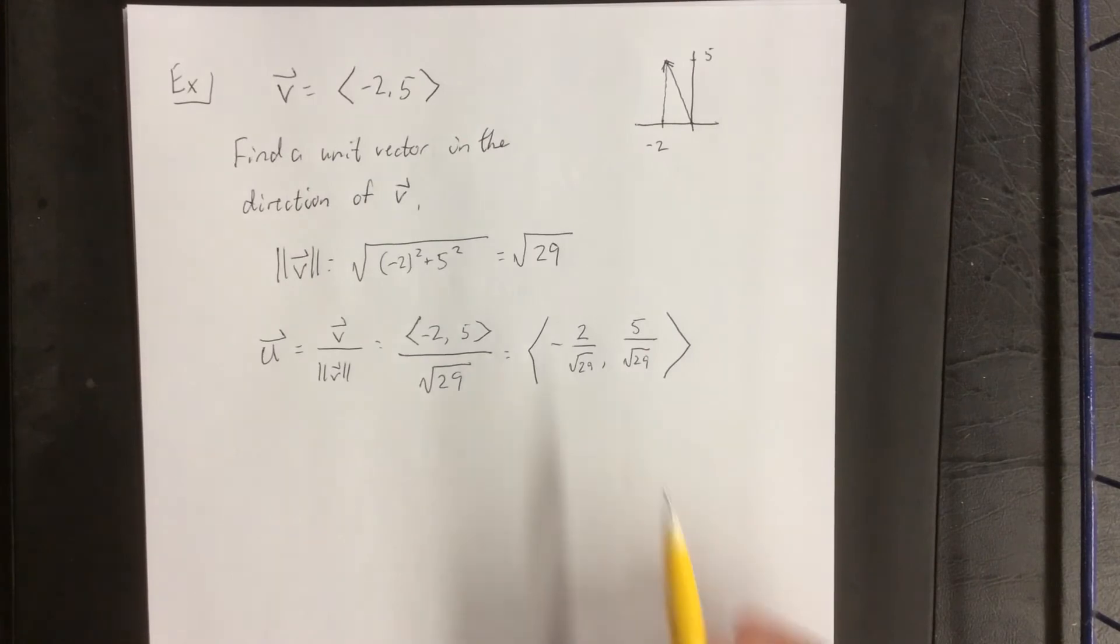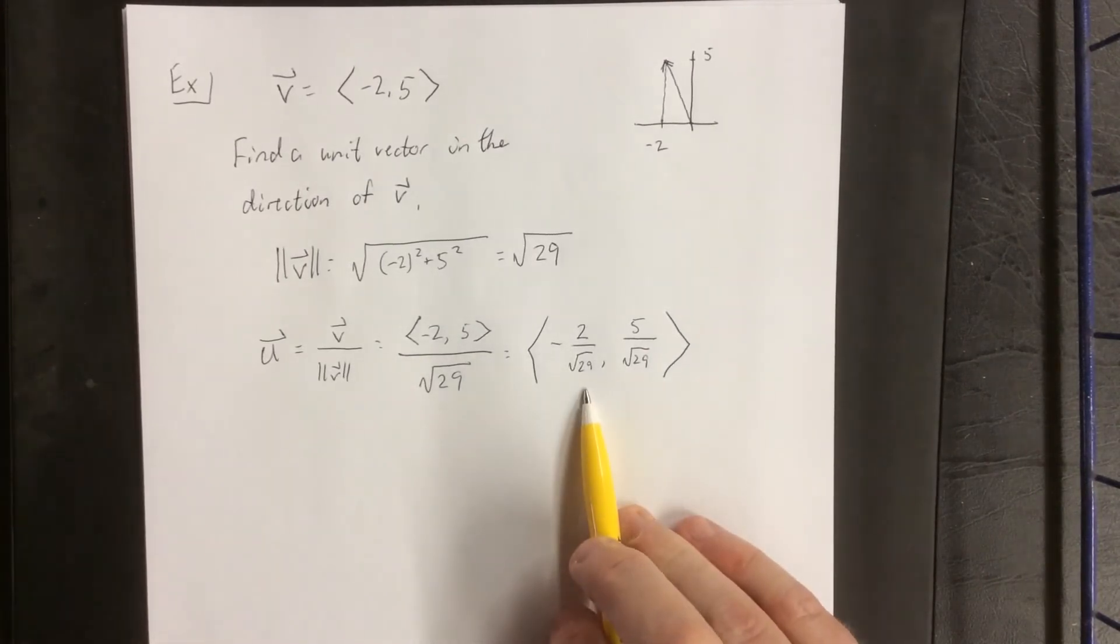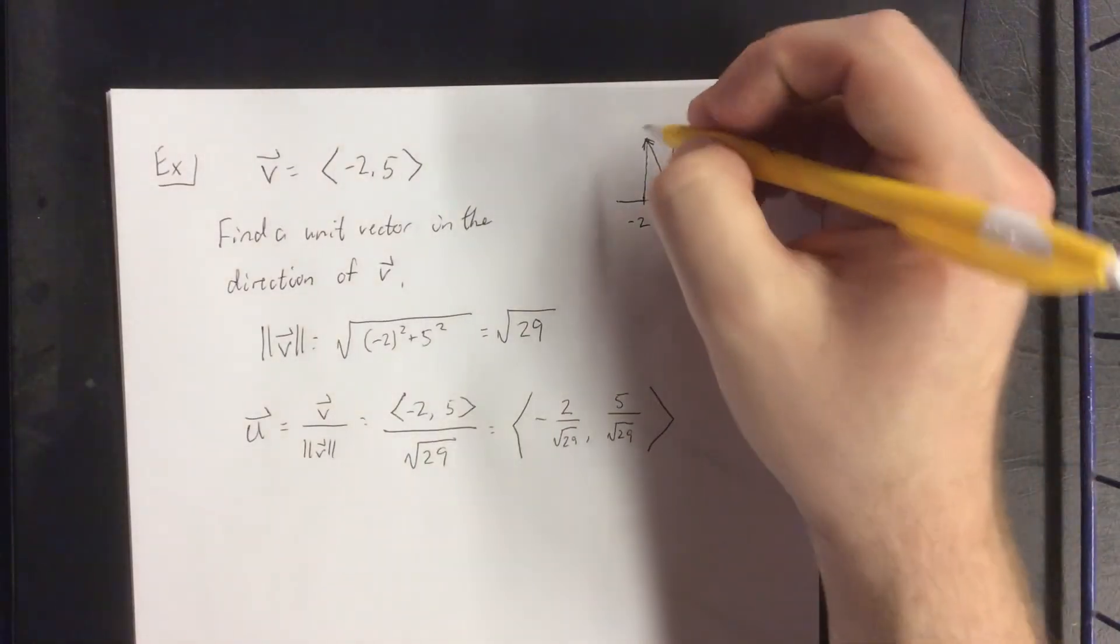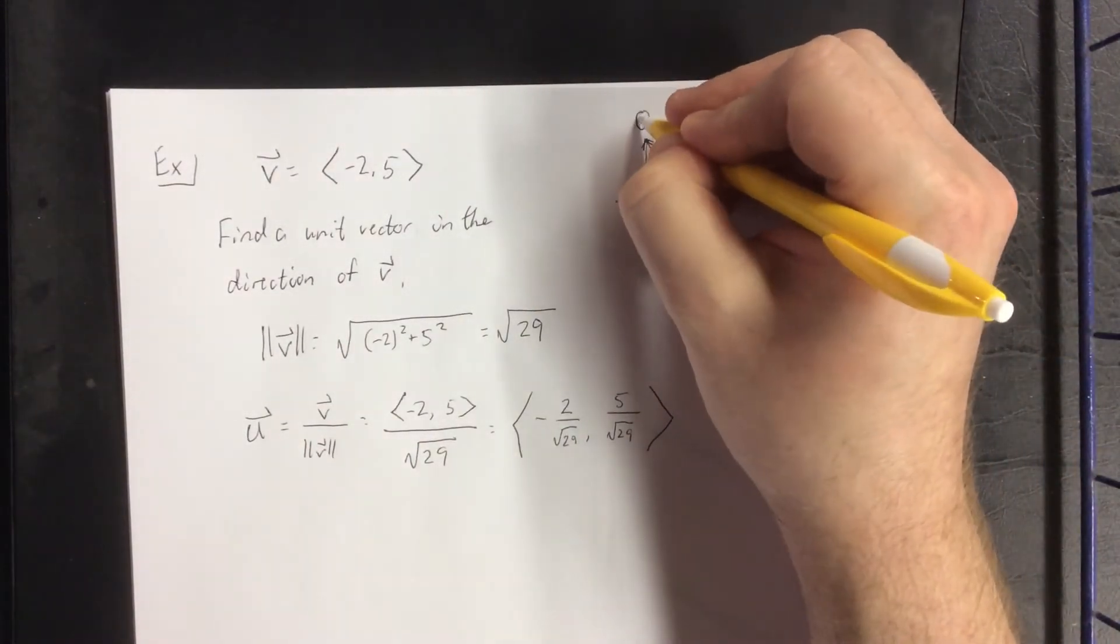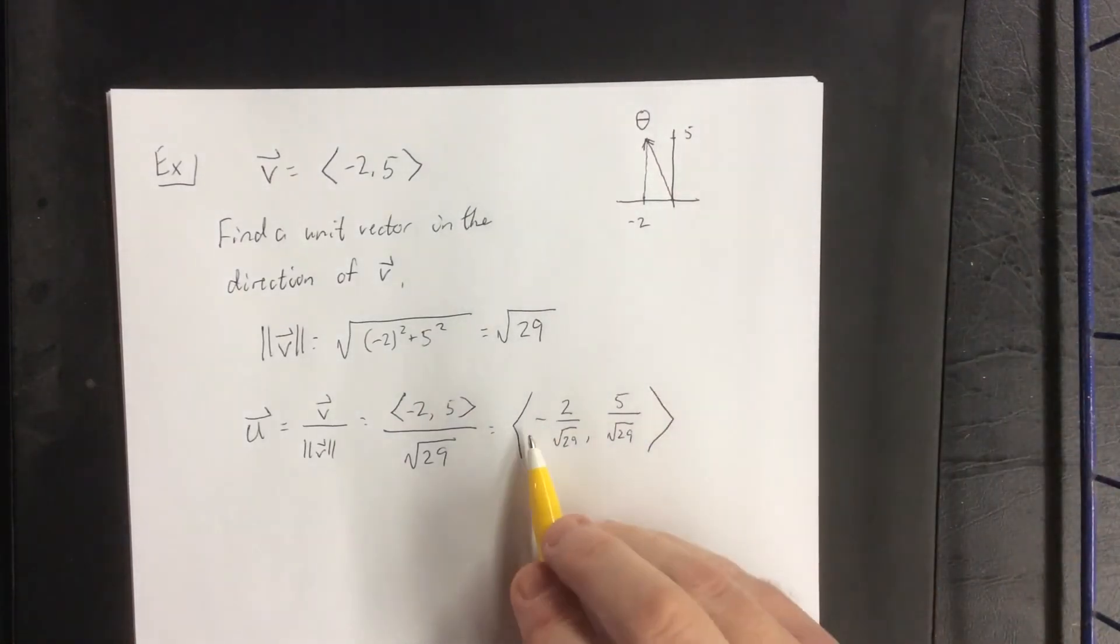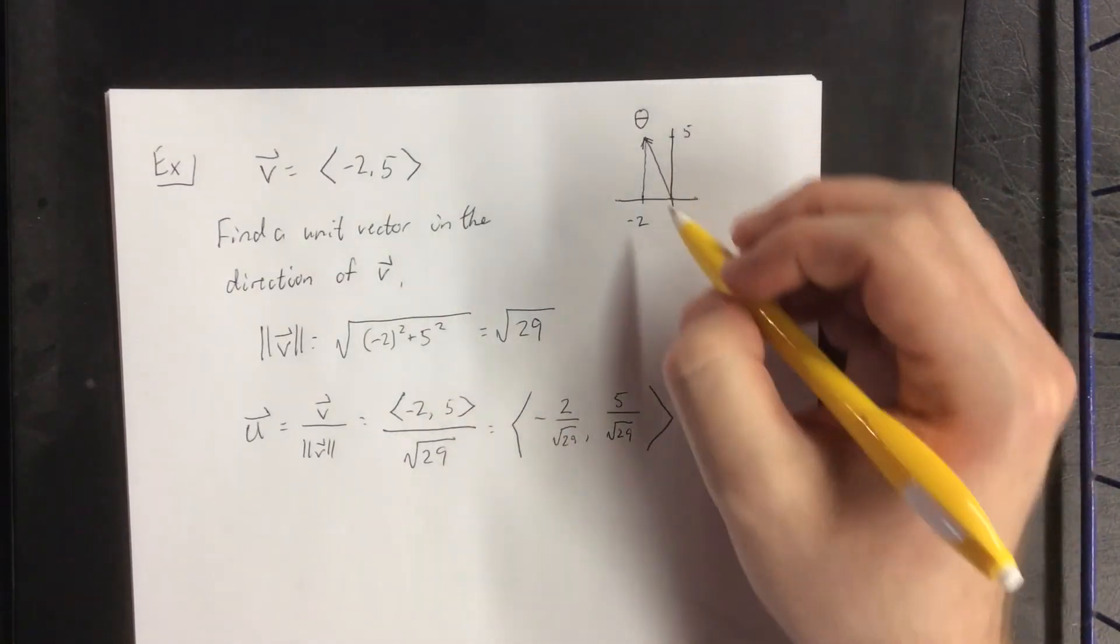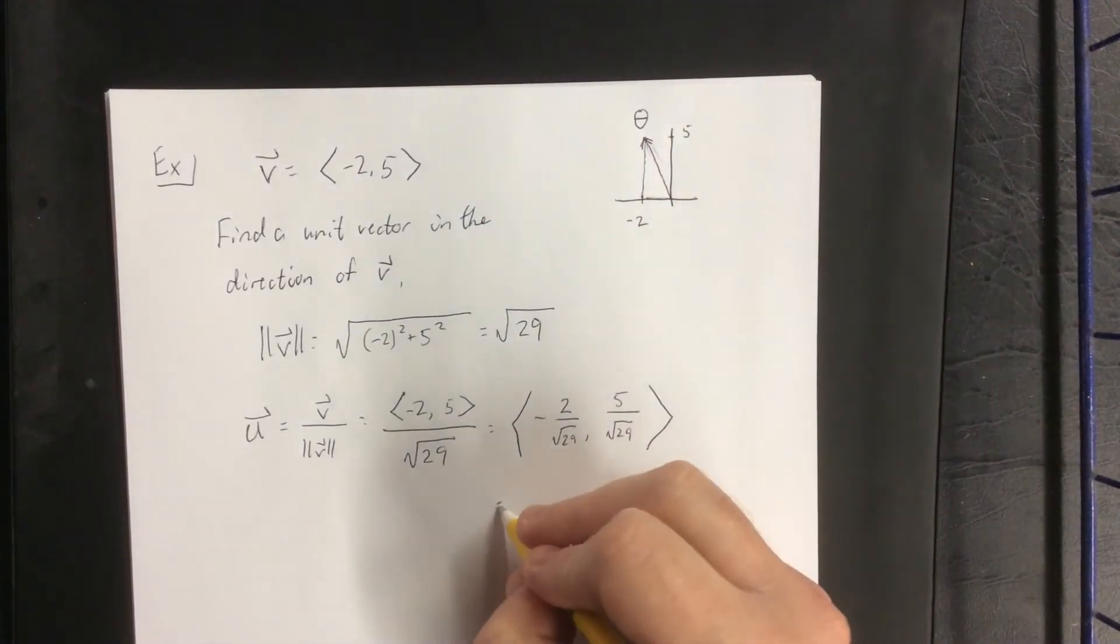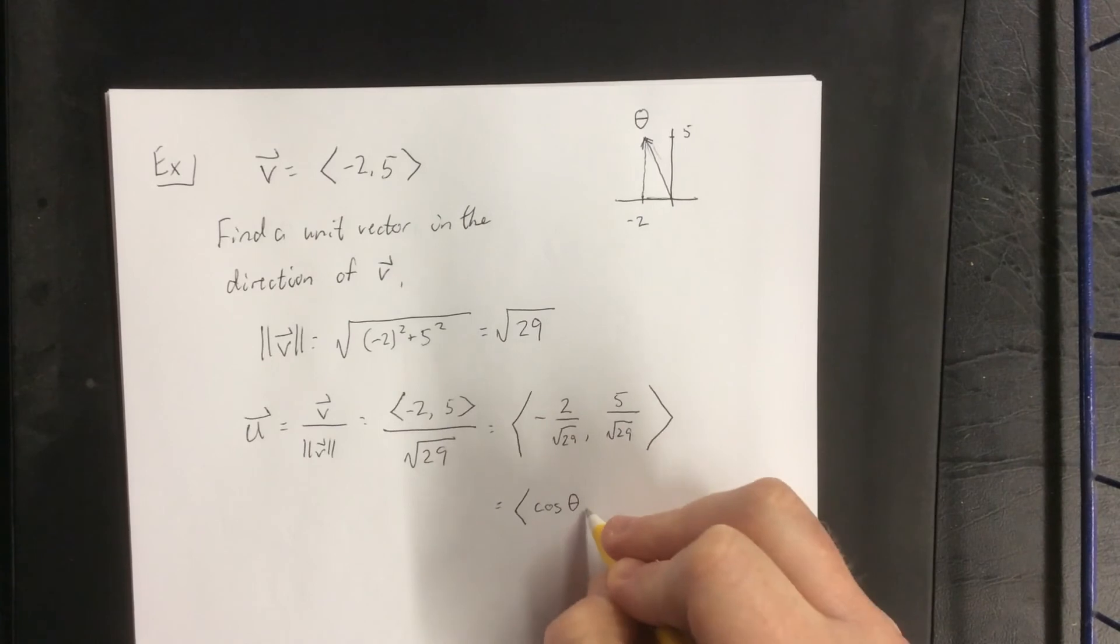The thing I need to point out is that this is exactly where trigonometry comes into play. If I label this angle as theta, then -2 over the square root of 29 refers to the adjacent side divided by the hypotenuse. This is exactly the cosine of theta.